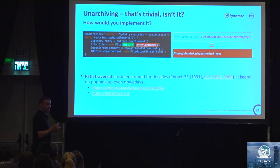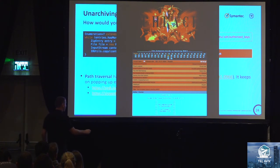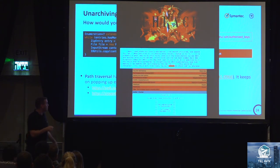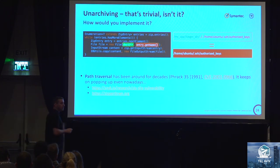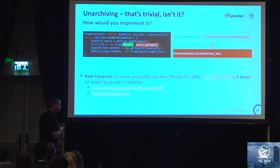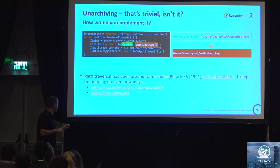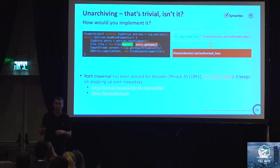Path traversal has been around for decades. We can see FRAC35 from 1991 discussing path traversal against WWIV, a well-known BBS framework that is still being maintained. The interesting part is that it's still very relevant today. In the past year, research by Snyk uncovered a huge amount of current open source frameworks vulnerable to this problem. Another notable research was ZipperDown by Pangu, which showed a large number of iOS and Android apps susceptible to path traversal.